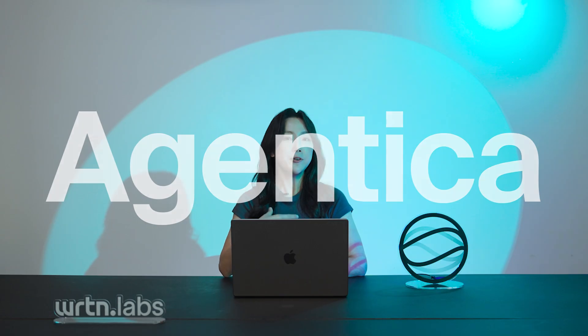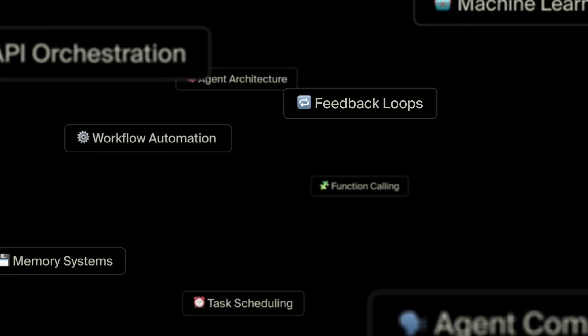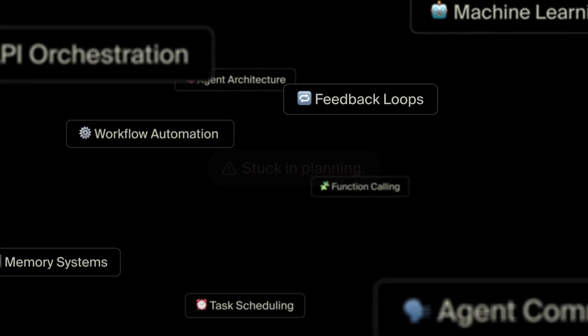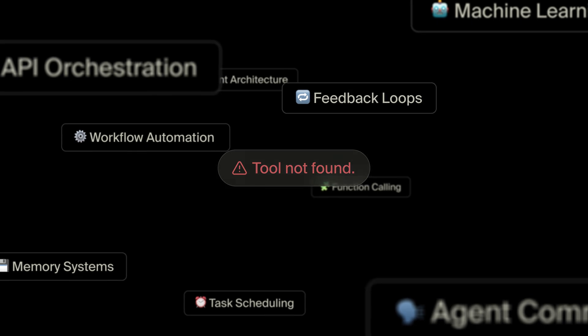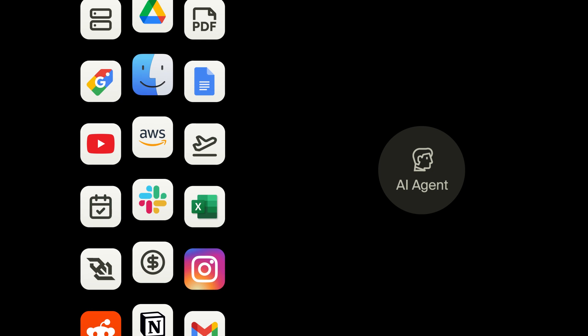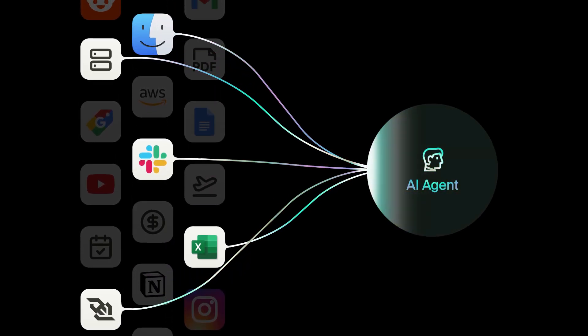Are you excited about AI agents but overwhelmed by all the jargon and complexity? Building an AI that hooks into backend services can feel like you're solving a puzzle blindfolded — wrangling with LLMs, function calls, prompt engineering, and endless workflow graphs. It's enough to make even seasoned developers scream into the void. But what if creating an AI agent was as easy as writing ordinary code? What if you could build scalable, flexible, and mass-producible AI tools without any PhD in machine learning?